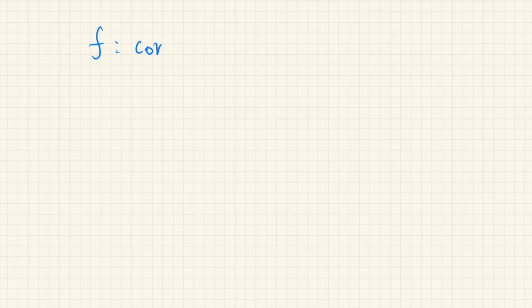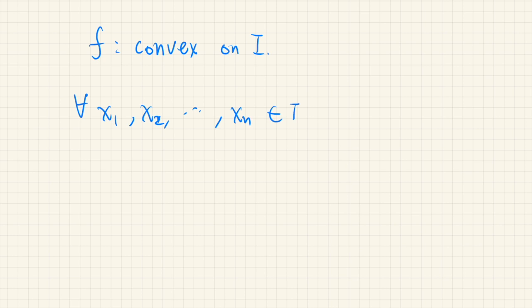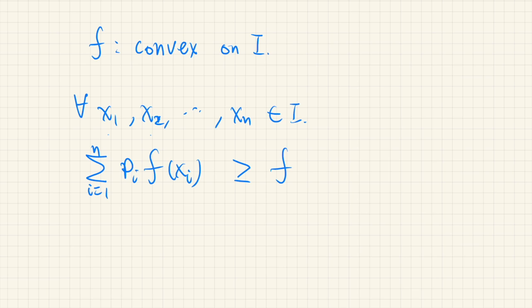In this video we give one proof of Jensen's inequality. Jensen's inequality is about a convex function. So let's say f is a convex function on some interval. Then for any choice of n points in the interval, the weighted average of the functional values at these points is greater than or equal to the functional value of the average point.